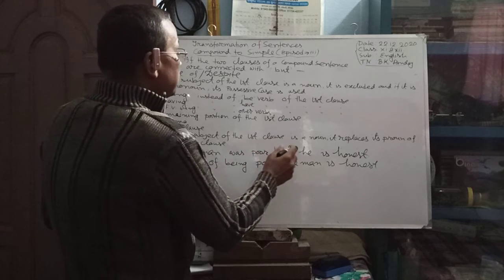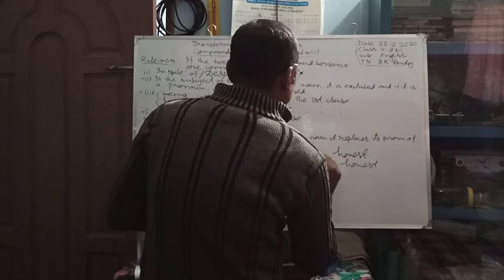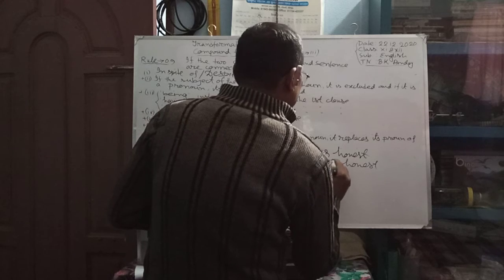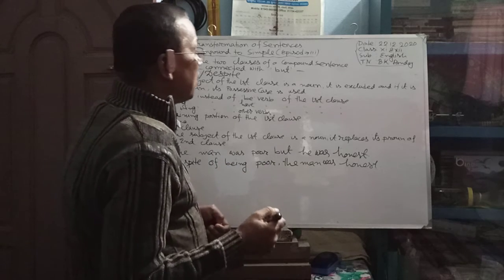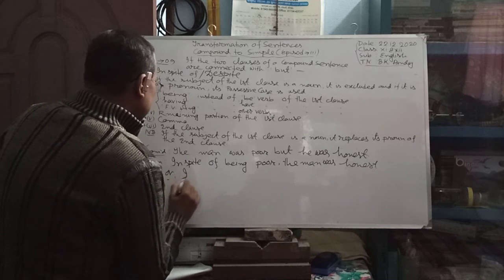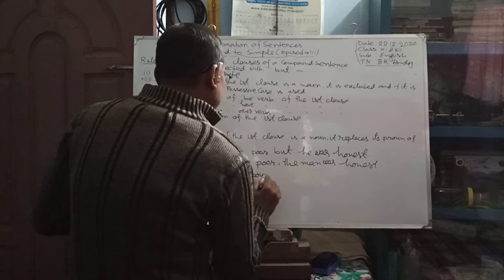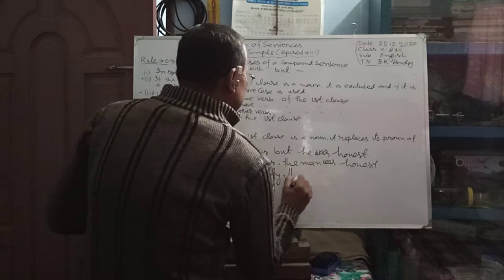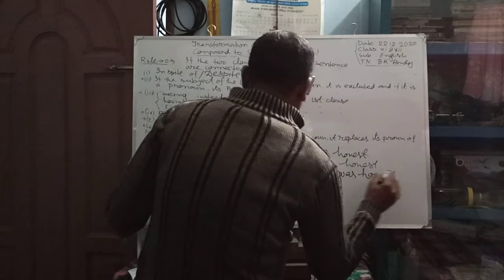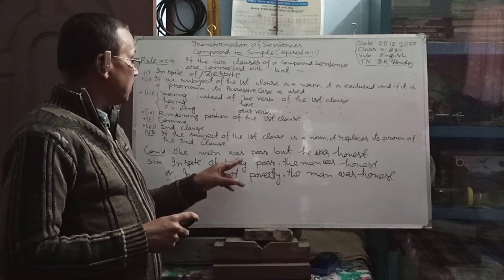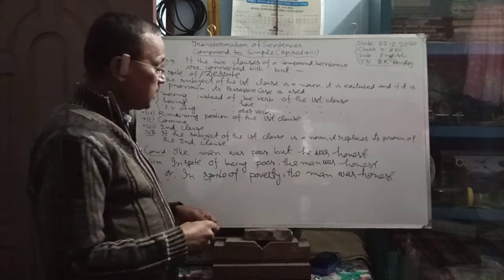For example: 'The man was poor, but he was honest.' Simple form: 'In spite of being poor, the man was honest.' Or: 'In spite of poverty, the man was honest.' If we don't use any 'be' verb, 'have' verb, or other verb, we have to write the noun form of the adjective or adverb.